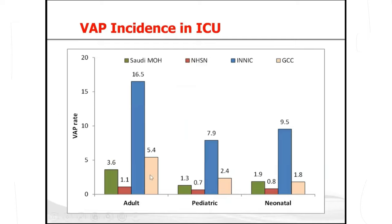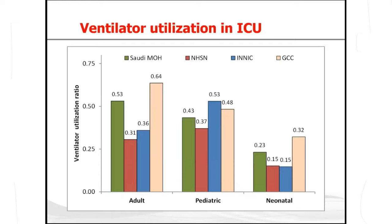In Saudi Arabia, VAP rates range between 1.3 in pediatrics, 1.9 in neonatal ICUs, and 3.6 in adults. This is one of the higher infection rates among the three common HAIs — CLABSI, VAP, and CAUTI — and remains higher than NHSN benchmarks. Ventilator utilization in Saudi Arabia ranges from 23% in neonates to 53% in adults, reflecting higher ventilation use in the adult population.